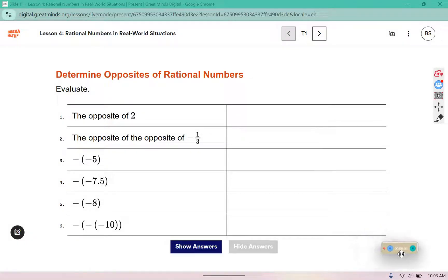We are evaluating by finding the opposites of some of these numbers. So here I see negative 10. The opposite of negative 10 would be positive 10, and the opposite of positive 10 gets me back to negative 10. This one has negative 8. What is the opposite of negative 8? Write that in the blank.